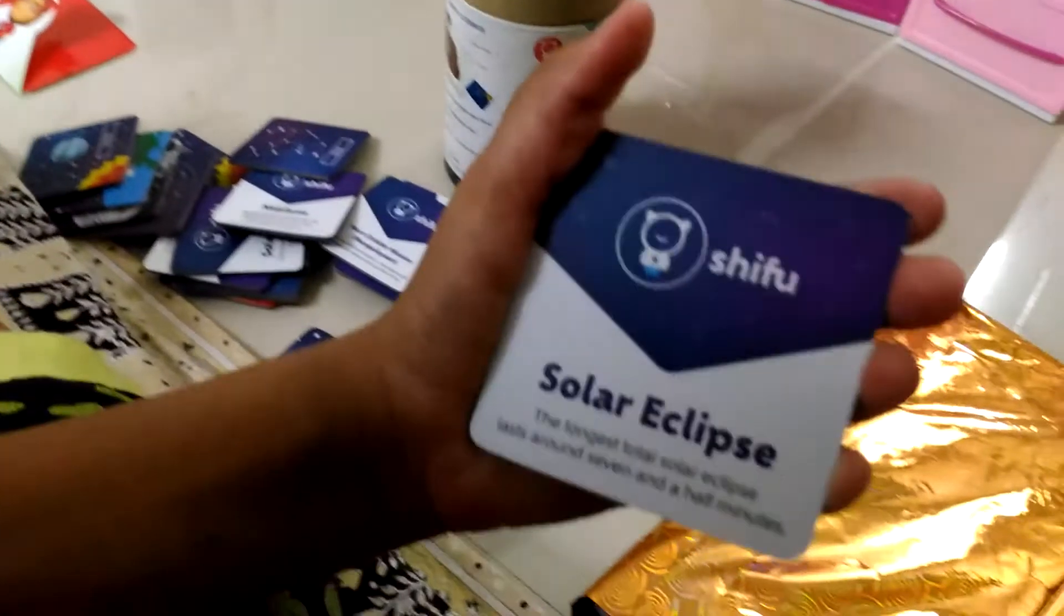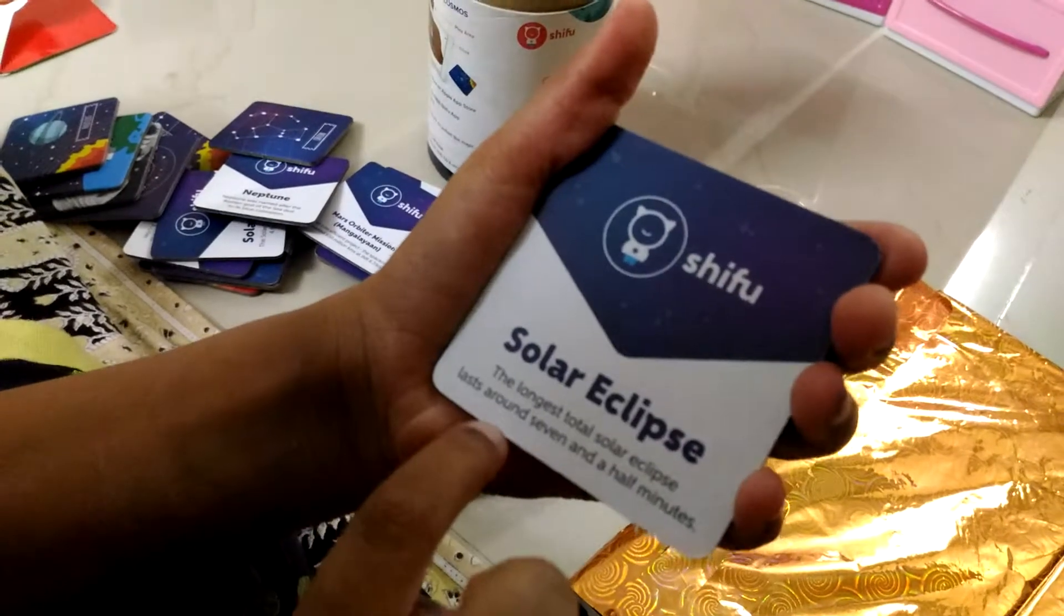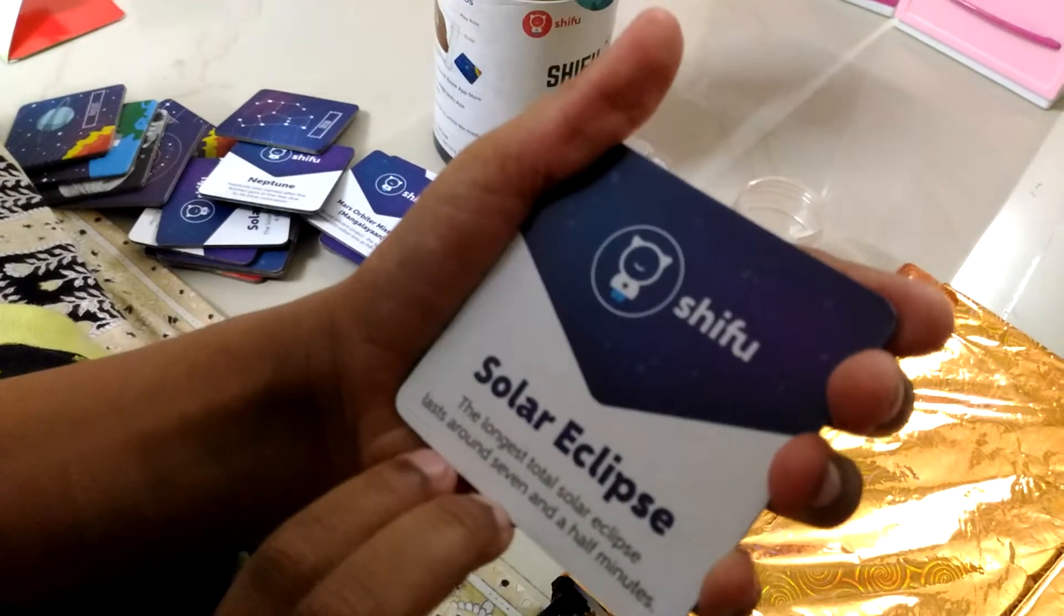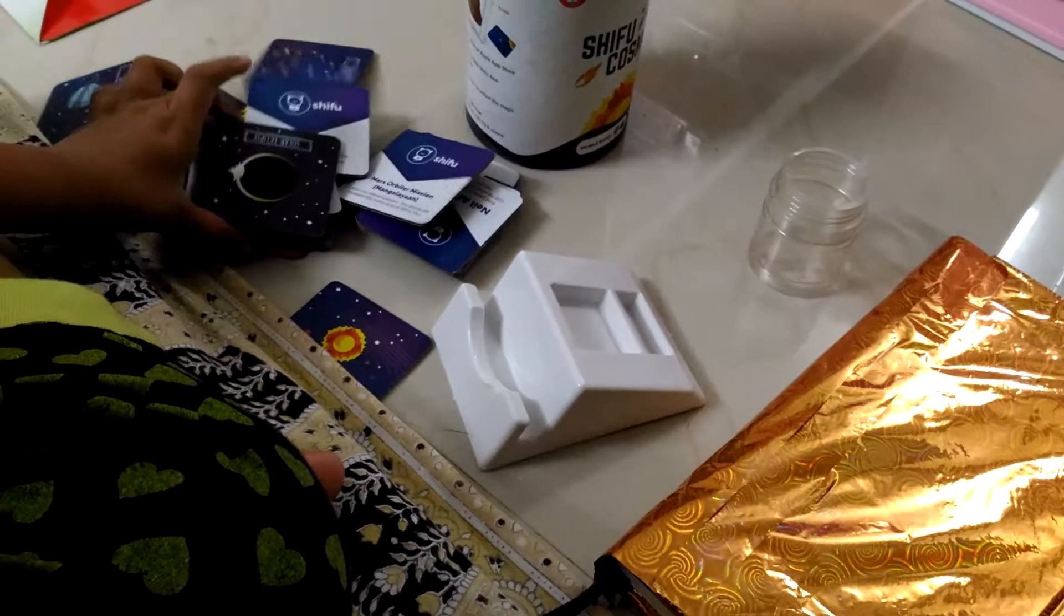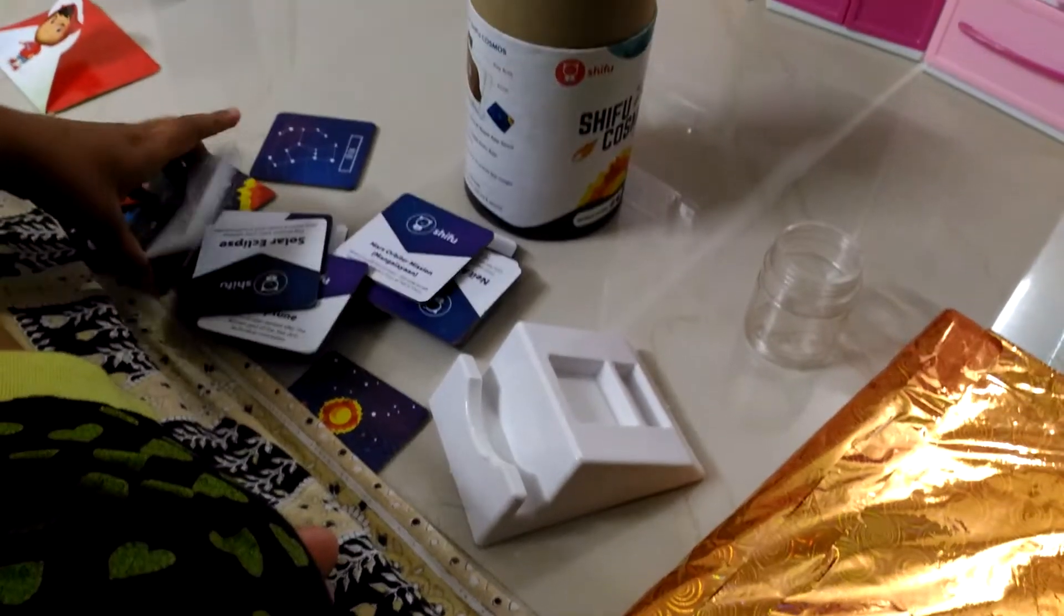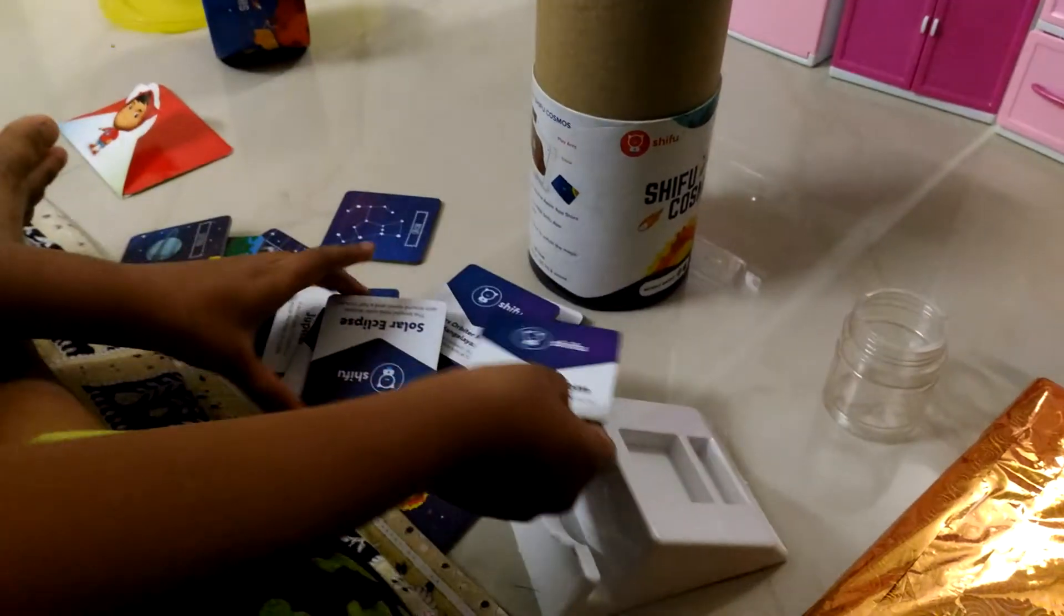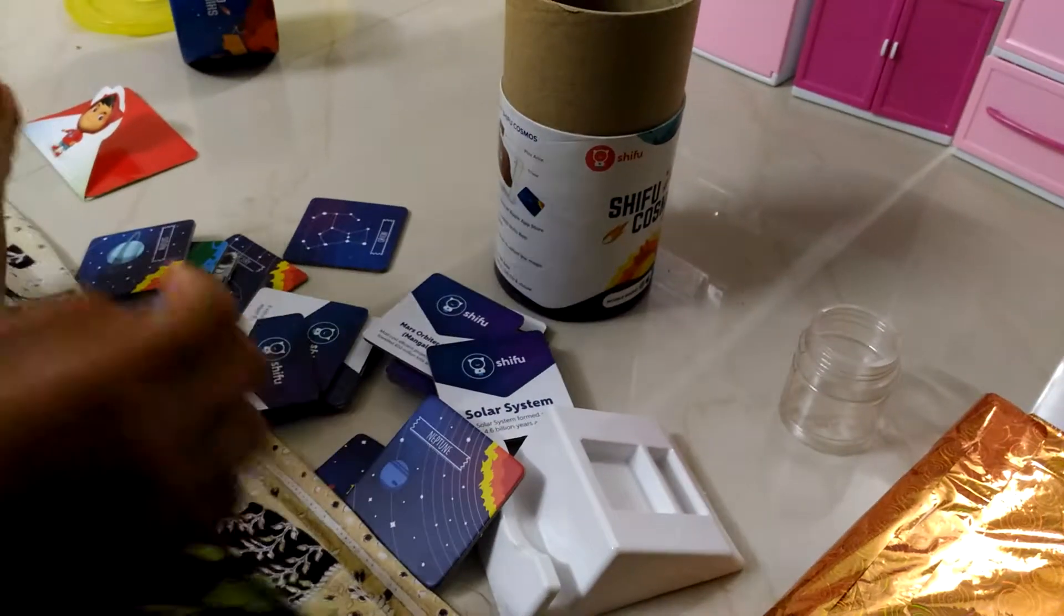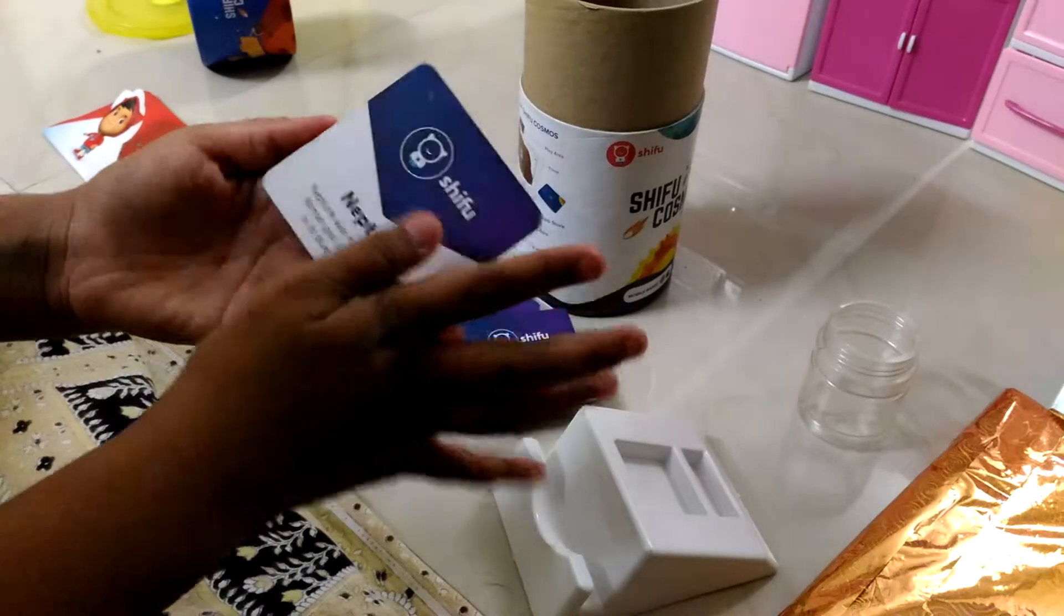Shall I tell you the fact of the solar eclipse? Say yes. Yes. The longest total solar eclipse lasts around 7 and a half minutes. And you know something very funny? Many animals think that it is night, so they get ready to sleep during the solar eclipse time. For example, birds. I just saw it in my husband's book and I wanted to tell you here.